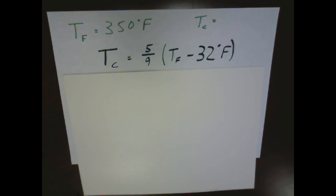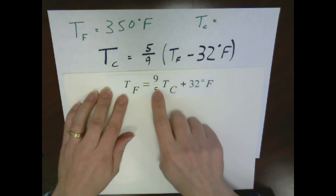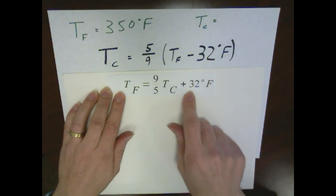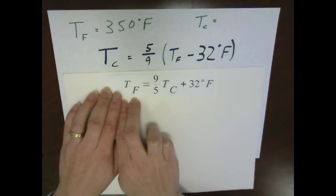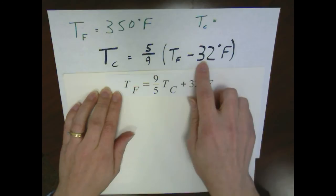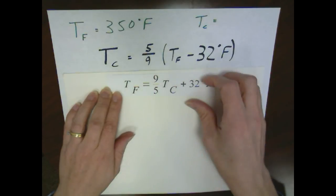Now you might recognize this equation looks similar to another one. The one that's often shown in textbooks gives us temperature Fahrenheit equals 9 fifths the temperature in Celsius plus 32 degrees Fahrenheit. This is really just doing the algebra of subtracting the 32 over to the other side, and then you cross multiply so the 9 fifths becomes 5 ninths.